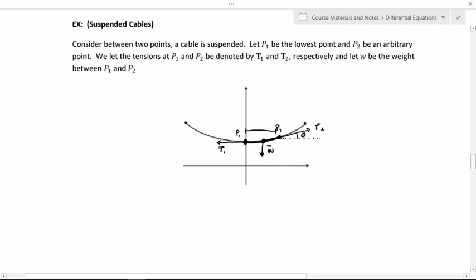So if I break down, for example, T2 into its components, if I put theta here, then this side right here and this side right here will have lengths. This will be the magnitude of T2 cosine of theta, and this is the magnitude of T2 sine of theta.